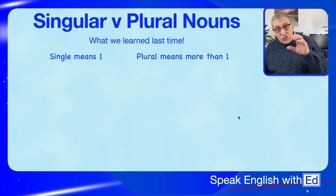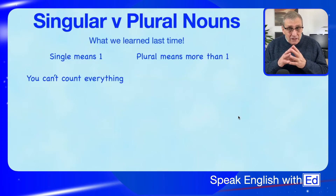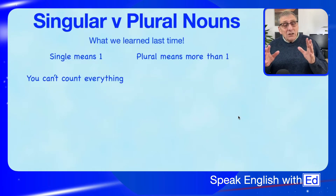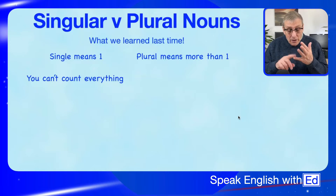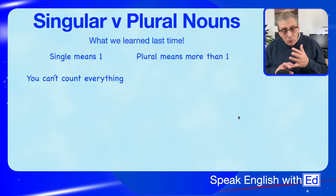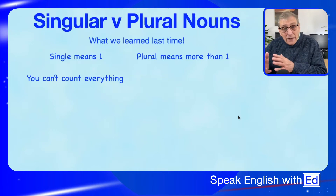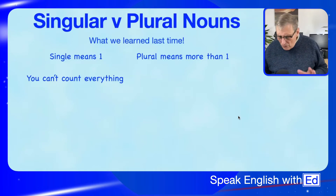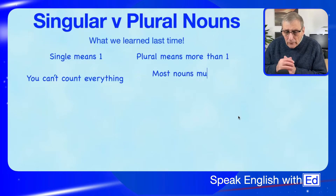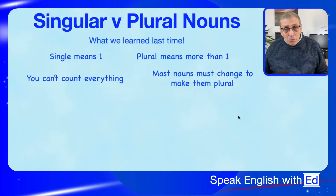It doesn't have to be just whole numbers. Now, you cannot count everything — some things you just can't count. We also learned that you can count cups, but you can't count water. So you can count cups of water, but you can't count the water itself. You can count spoons of honey, but you can't count honey. So you can't count everything.